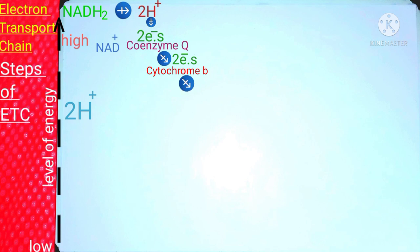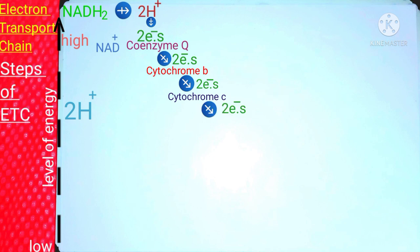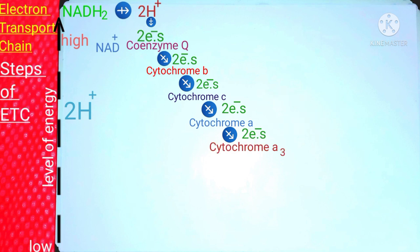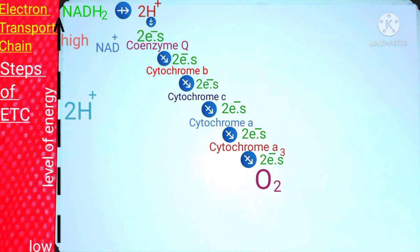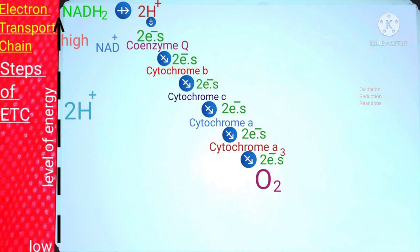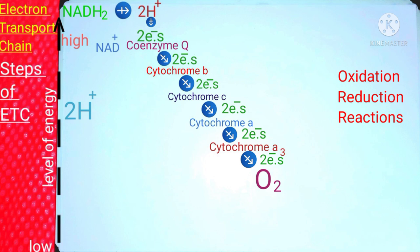Cytochrome B passes its electrons to cytochrome C — cytochrome B is oxidized and cytochrome C is reduced. Cytochrome C then passes electrons to cytochrome A, which is reduced, and then to cytochrome A3. Finally, cytochrome A3 transfers its electrons to molecular oxygen — cytochrome A3 is oxidized and oxygen is reduced. Throughout this whole series, oxidation-reduction reactions are occurring, in other words, redox reactions.